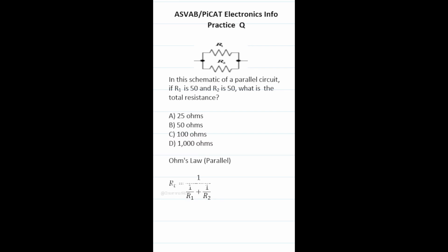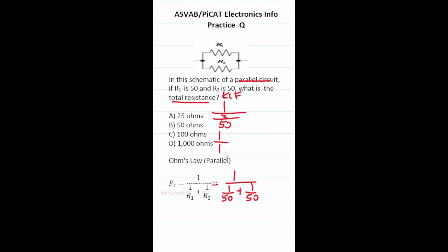Practice test question: calculate the total resistance in a parallel circuit where R1 = 50Ω and R2 = 50Ω. Using the formula: R_total = 1 / (1/R1 + 1/R2). Plugging in: 1/50 + 1/50 = 2/50. Now keep-change-flip: 1 ÷ (2/50) = 1 × (50/2) = 50/2 = 25. So the total resistance is A, 25 ohms.